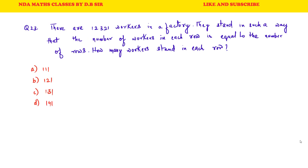Question number 23: There are 12,321 workers in a factory. They stand in such a way that the number of workers in each row is equal to the number of rows. How many workers stand in each row? We need to find the square root of 12,321.